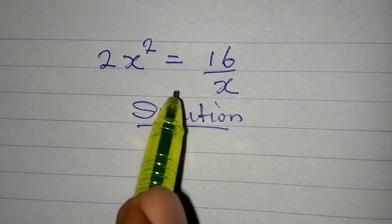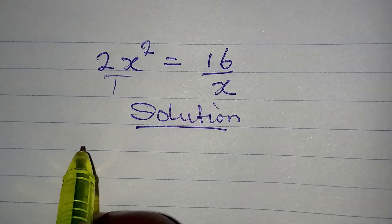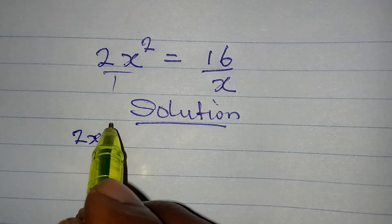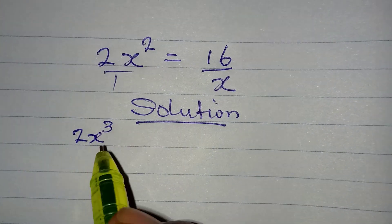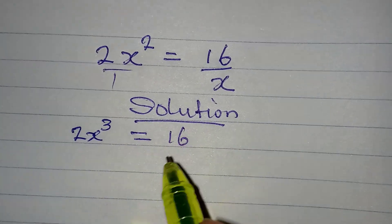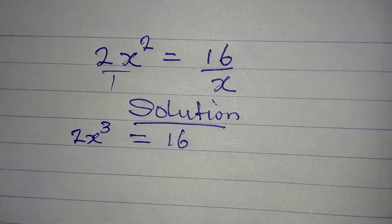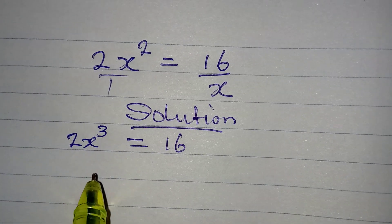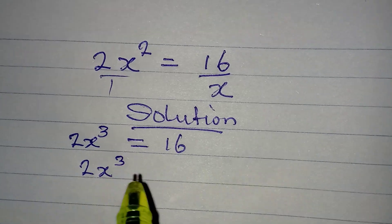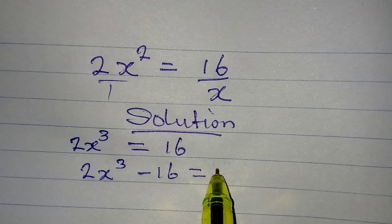The first step is to cross multiply, because this could be over 1. So we will have 2x, then x times x squared will give us the power of 3, and this is equal to 16. The next thing is bringing everything to the left so that we have 2x to the power of 3 minus 16 equal to 0.